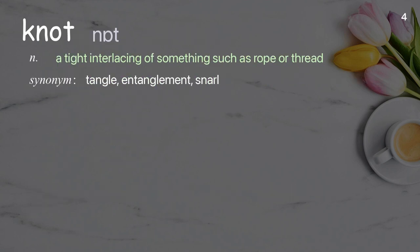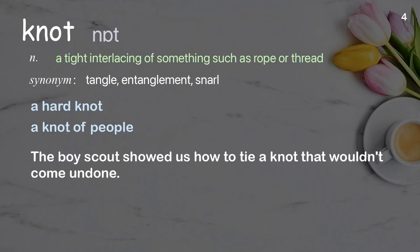Knot: A tight interlacing of something such as rope or thread. Examples: A hard knot. A knot of people. The Boy Scout showed us how to tie a knot that wouldn't come undone.